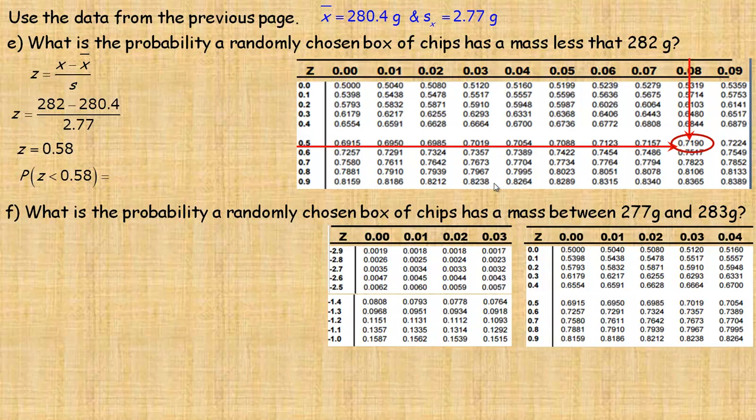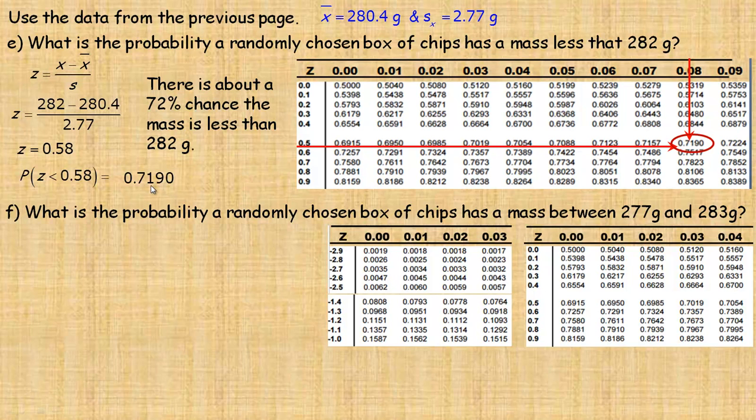So the probability that it is less than 0.58 would be 0.7190. So rounding to the whole number of percent, it would be about a 72% chance the mass is less than 282 grams.